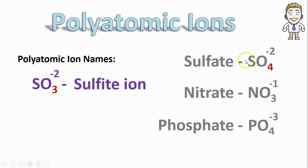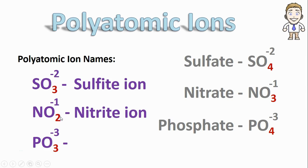And a similar pattern happens with the other two. NO2 minus one, because it has one less oxygen, is called nitrite. And PO3, instead of phosphate, is called phosphite.